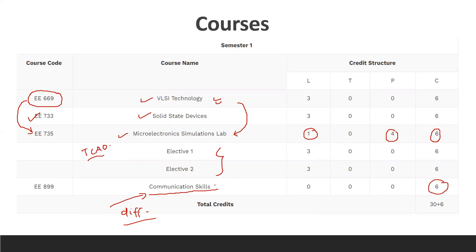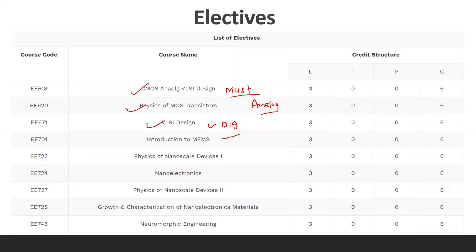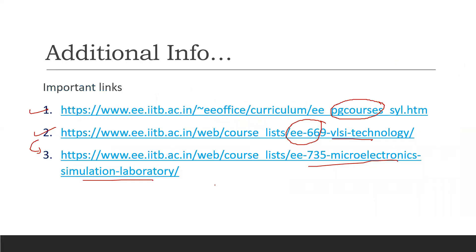It may be a little hectic in the first two semesters, and TA work starts in the second semester itself, whereas in other IITs it typically starts in third semester — making the schedule additionally hectic. Placements are a hundred percent no doubt, but many people are going to sit for VLSI companies. Visit the provided links to acquire additional information about this course.